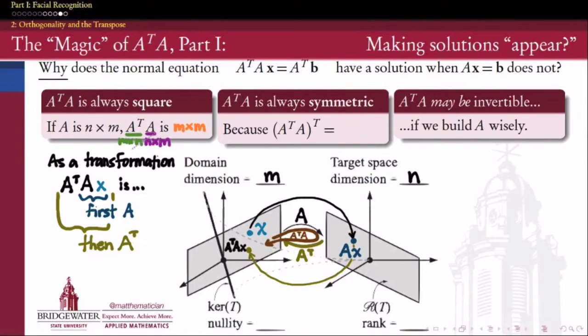Second important property of A transpose times A is not obvious why we care about it right now, but later on it will have a very big impact. A transpose A is a symmetric matrix, meaning it is equal to its own transpose. We can see that by using the one fact about multiplication of matrices and transposition that is salient here,